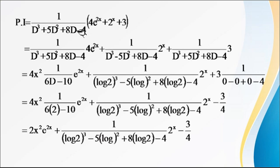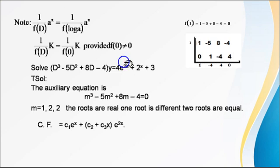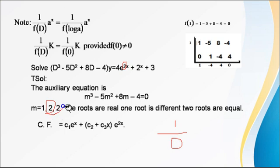For e^(2x): replace D with the x coefficient 2. Since m = 2 is a repeated root (appearing twice), the denominator will be zero up to two differentiations. So we must differentiate f(D) = D³ − 5D² + 8D − 4 twice. First differentiation gives f'(D) = 3D² − 10D + 8. Second differentiation gives f''(D) = 6D − 10. Substituting D = 2: 6(2) − 10 = 12 − 10 = 2, which is not zero.